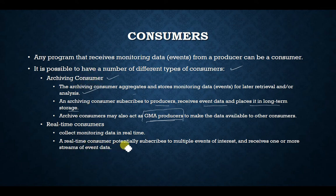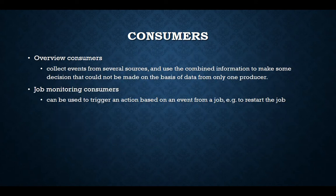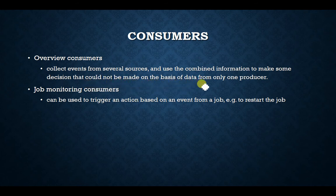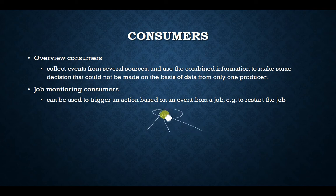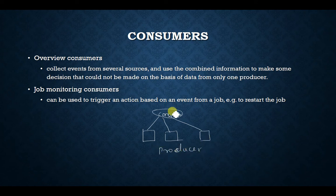A real-time consumer potentially subscribes to multiple events of interest and receives one or more streams of event data. The third type is the overview consumer, which collects events from several sources and uses the combined information to make decisions that could not be made based on data from only one producer. This type of consumer accesses data from multiple producers and makes decisions based on the combined information.